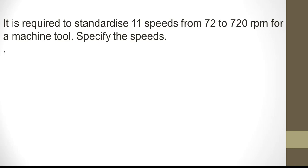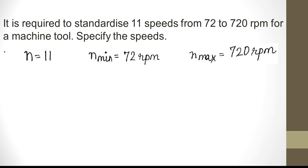It is required to standardize 11 speeds from 72 to 720 rpm for a machine tool. So we take n = 11, n minimum (n1) = 72 rpm, and n maximum = 720 rpm.